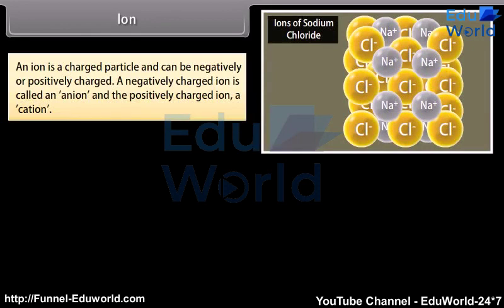An ion is a charged particle and can be negatively or positively charged. A negatively charged ion is called an anion, and the positively charged ion is called a cation.